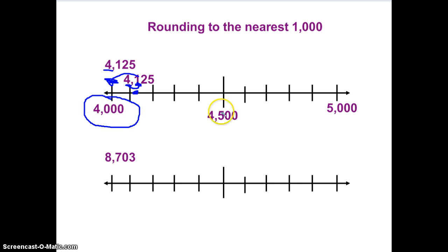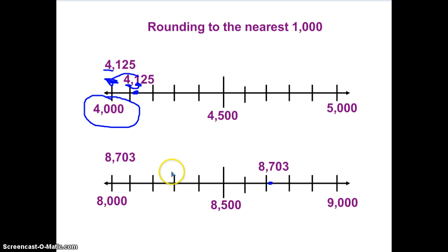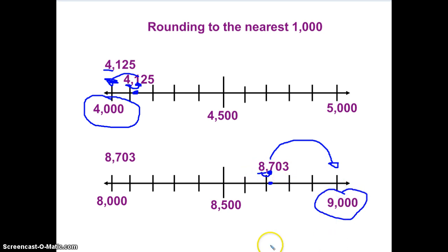I'm going to do the last example as a quick review to see if it works again with thousands. Here I've set up my number line: 8,000, 9,000, midpoint 8,500, and my number 8,703 on the number line. I'm rounding to the nearest thousand. Here's my thousands place — let's look right next door to the neighbor. The neighbor has a 7 in the hundreds place. 5 or more. We're going to let it soar. So 8,703 soars to 9,000. Hopefully this was able to help you review and remember what we've learned in class. Watch it again if you need practice, and don't forget to watch the song again to help you practice rounding to the nearest ten, hundred, and thousand.